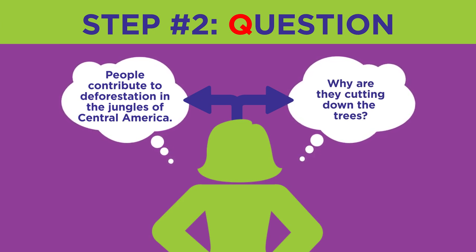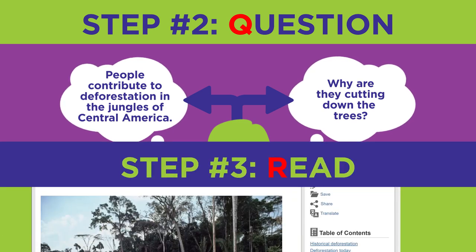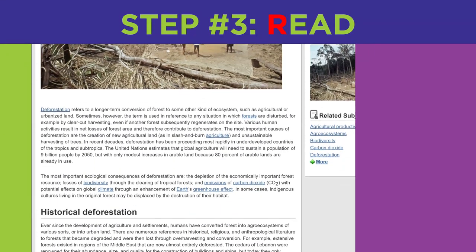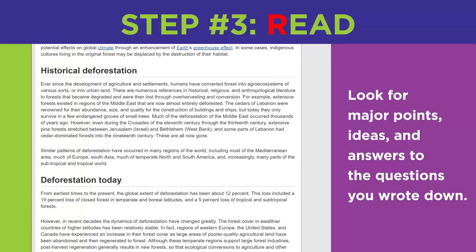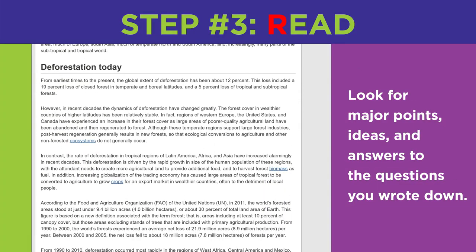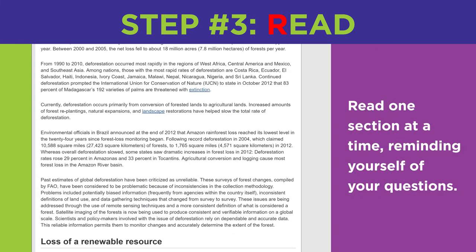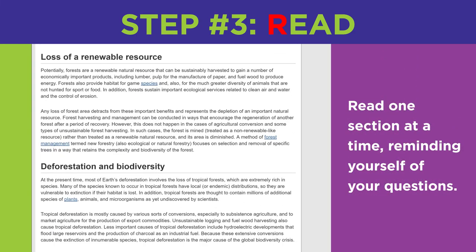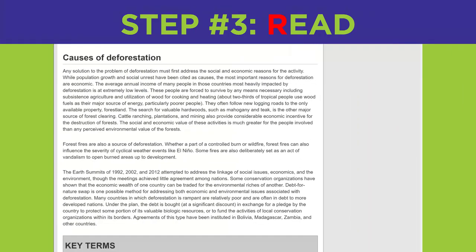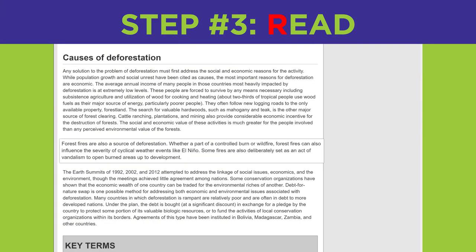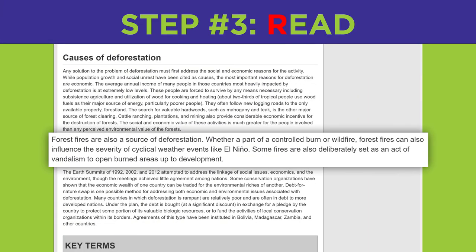Now you know what to watch for and focus on as you read. For the third step, read the text carefully looking for major points, ideas, and answers to the questions you wrote down. Read one section at a time, reminding yourself of your questions. For example, when reading this section, you'll notice that forest fires is one answer to your question: what are the causes of deforestation?